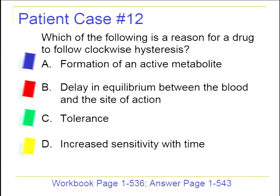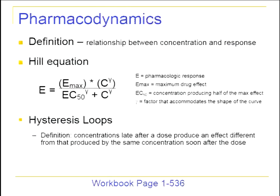Before specific drug characteristics, we'll briefly cover pharmacodynamics and hysteresis — which has been known to appear on the exam. The question: which of the following is a reason for a drug to follow clockwise hysteresis? Options: formation of an active metabolite, delay in equilibrium between blood and site of action, tolerance, or increased sensitivity with time.